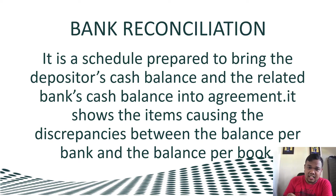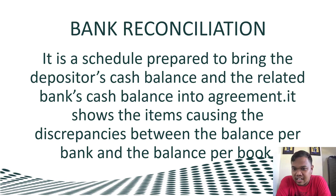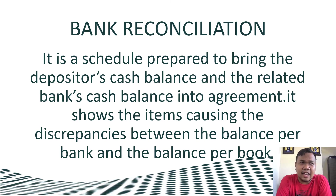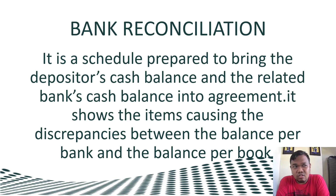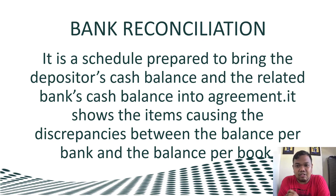A bank reconciliation is a schedule prepared to bring the depositor's cash balance and the related bank's cash balance into agreement. It shows the items causing discrepancies between the balance per bank and the balance per book. We compare the cash in bank recorded in our ledger to the balance shown in the bank statement. Since these are usually not equal, the bank reconciliation reconciles them so that at the end, both balances will be equal.